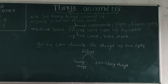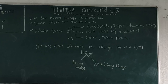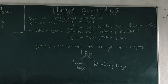So we can divide things into two types: living things and non-living things. Plants, animals, and human beings are living things. But things like a chain, pebble, chalk, sand, hills, etc. are non-living things.